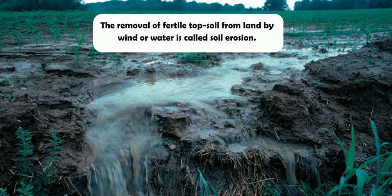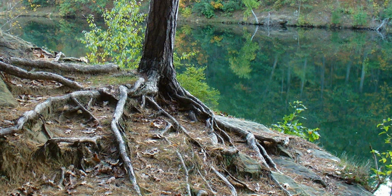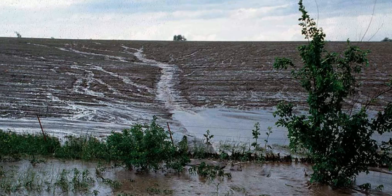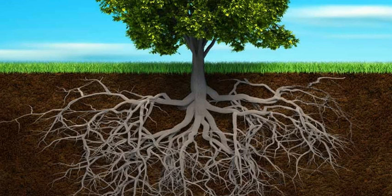Soil erosion: The removal of fertile topsoil from land by wind or water is called soil erosion. Soil erosion does not occur easily where the land is covered by vegetation such as trees and other plants. Soil erosion occurs easily in areas not covered by vegetation or with very little vegetation, as the roots of vegetation help hold the soil in place.